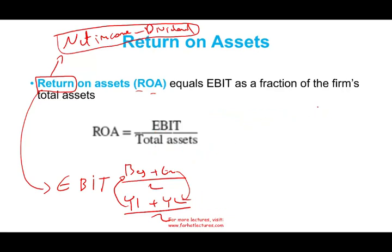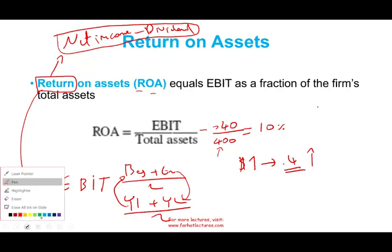Let's work a quick number to illustrate this concept. Assume your earnings before interest and taxes is $40 and you have $400 in average total assets. Return on asset is 10%. That means for every dollar in asset, you are generating $0.40 — it's an asset utilization ratio. Obviously, you want this ratio to be higher. You can increase your earnings, reduce your assets, or a combination of both to increase your return on assets.